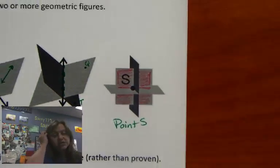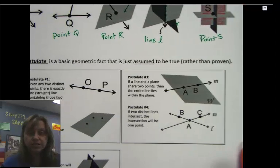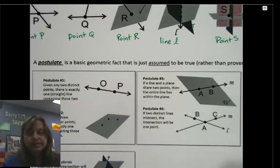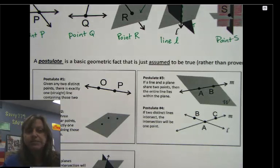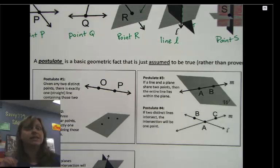Now, intersections are involved in what we call postulates. Postulates, we're going to be working with these all year. Here's your basic definition. A postulate is a basic geometric fact that we just assume to be true. In other words, it's so obvious that to argue it or to try to prove it somehow would be really difficult because it's really apparent that it would be true. So these are some basic postulates. These are things that we just say, I believe, that's right.